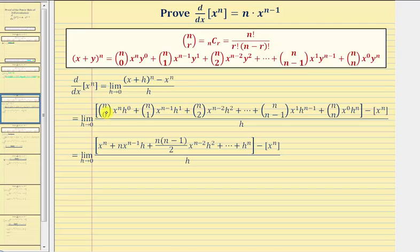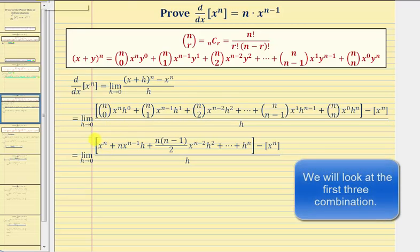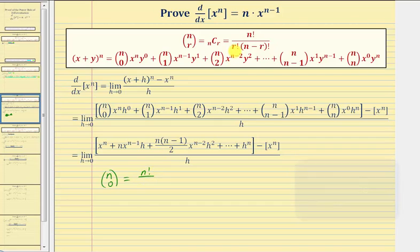Just for review, let's evaluate these combinations to verify the coefficients. n choose zero is equal to n factorial divided by zero factorial times n minus zero factorial, or just n factorial. Zero factorial is defined as being equal to one, and therefore this simplifies to one, which is why this first coefficient is one.